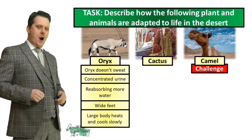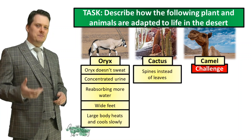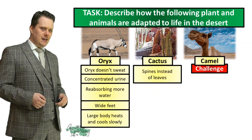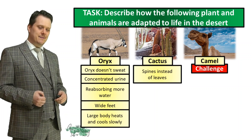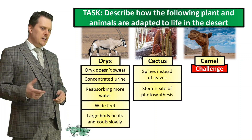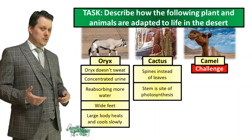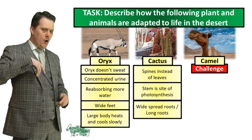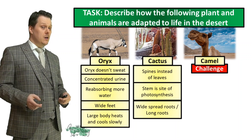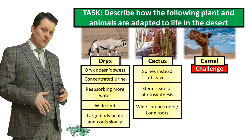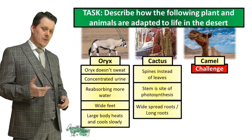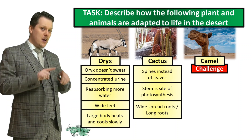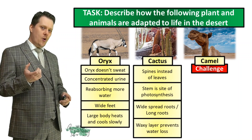In order for our cactus to prevent water loss, it has spines instead of leaves. But then it needed somewhere else to photosynthesize, so its site of photosynthesis is in the stem. In order to survive in a place with very little water, it has really widespread roots, or really long roots, so that it can absorb a lot of water when it rains or so that they can reach down to the water table. It also has a waxy layer which coats the cactus to prevent further water loss.